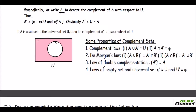Then you have the law of double complementation — when you find the complement of a complement. So (A complement) complement equals A only. And the last property is the laws of empty set and universal set: phi complement is the universal set, and the universal set complement is phi.